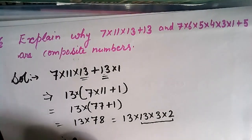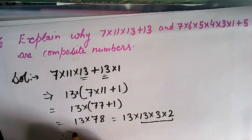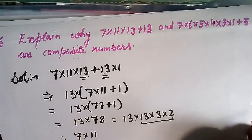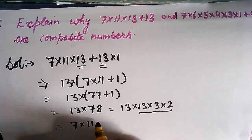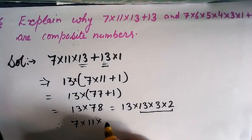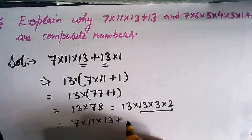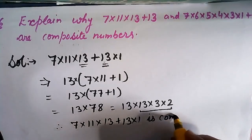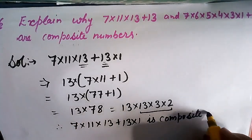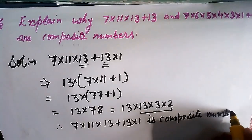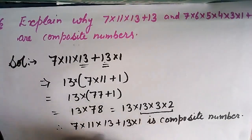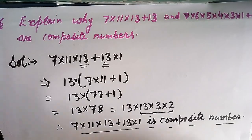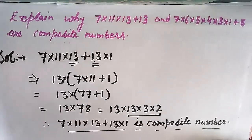We know that in prime numbers, there is only one factor — that is the number itself and 1. But here the factors are more than two, which is the reason that 7 × 11 × 13 + 13 is a composite number. Because it has more than 2 factors, but prime numbers have only 2 factors — that is 1 and the number itself.